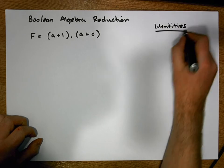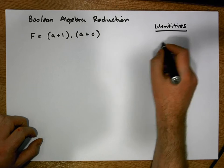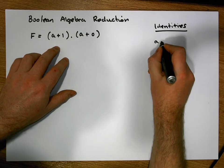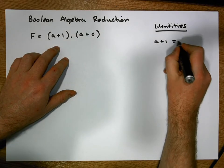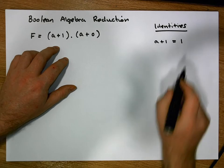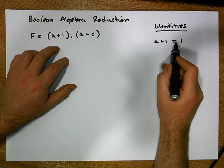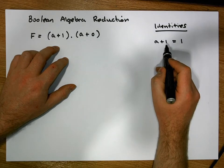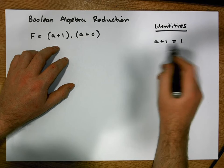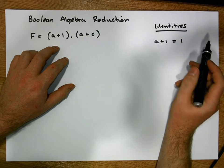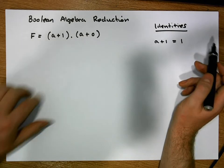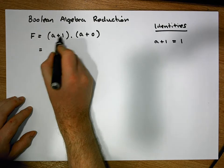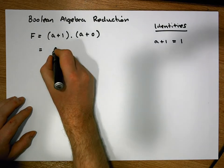One of our important identities says that anything OR'd with 1 is simply equal to 1. This is an important identity. This particular identity is what's known as the Universal Bound Identity. So in this situation, a OR'd with 1 is equivalent to 1.